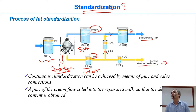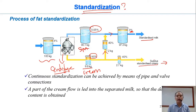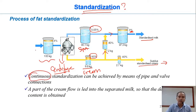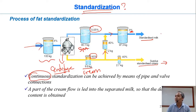The extra cream is used for making something else, for example butter. In the dairy industry, this process is carried out continuously — it's one flow in and two flows out, like this, continuously all the time.